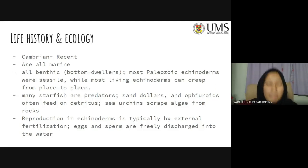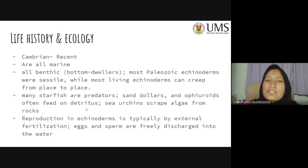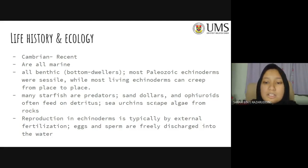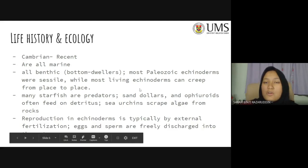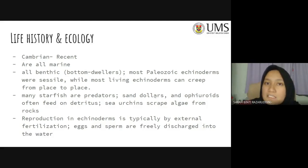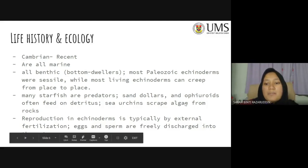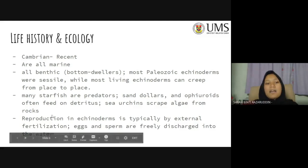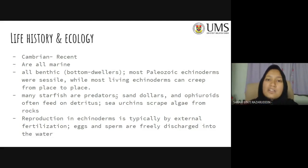Many starfishes are predators. Sand dollars and ophiuroids — another name for brittle stars — often feed on detritus, which is decaying organisms. Sea urchins scrape algae from rocks. Reproduction in echinoderms is typically by external fertilization, meaning eggs and sperm are freely discharged into the water. They also reproduce both sexually and asexually, which I will explain further shortly.